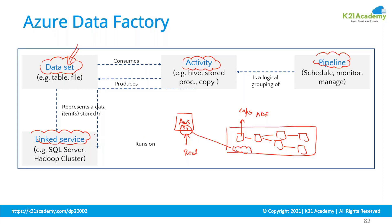Once we have specified the dataset, we also need to link it. If you want to read data from AWS, write into some location, read from on-premises, or extract data from Google Cloud Platform, you need to have the credentials — the URL, username, password, access keys, or any type of authentication mechanism. All of that authentication is part of linked services.